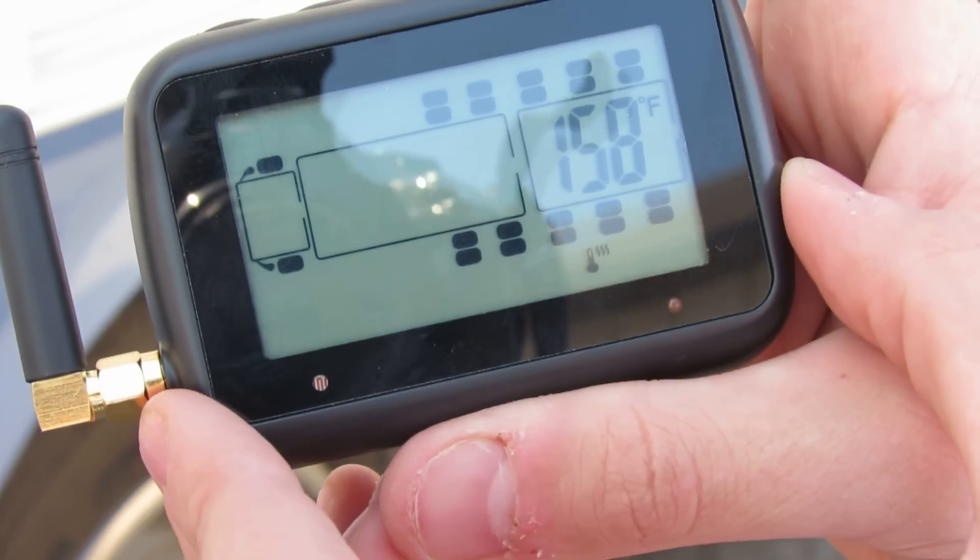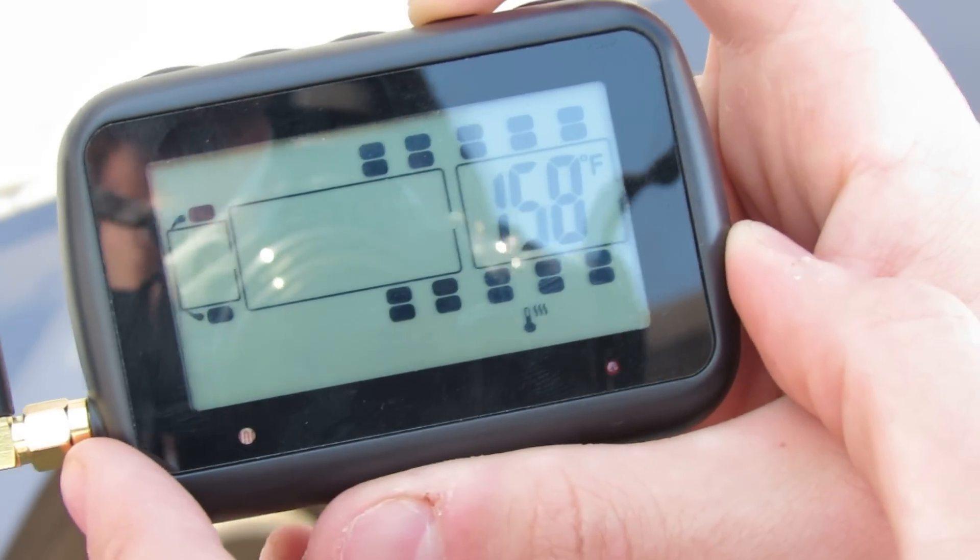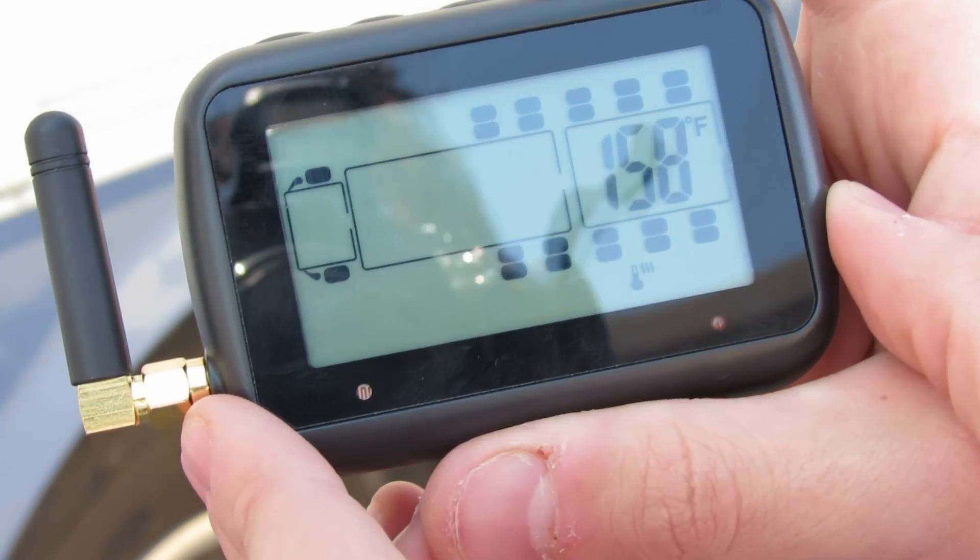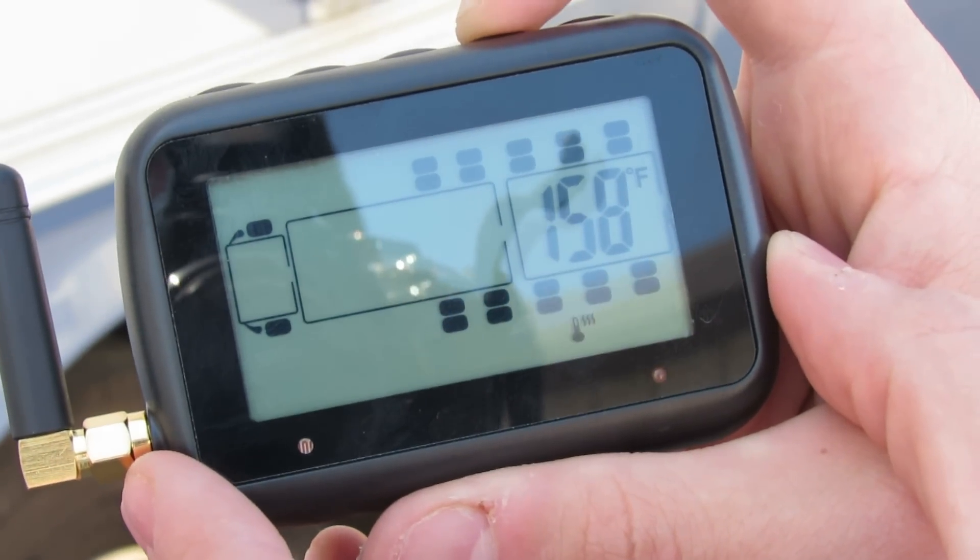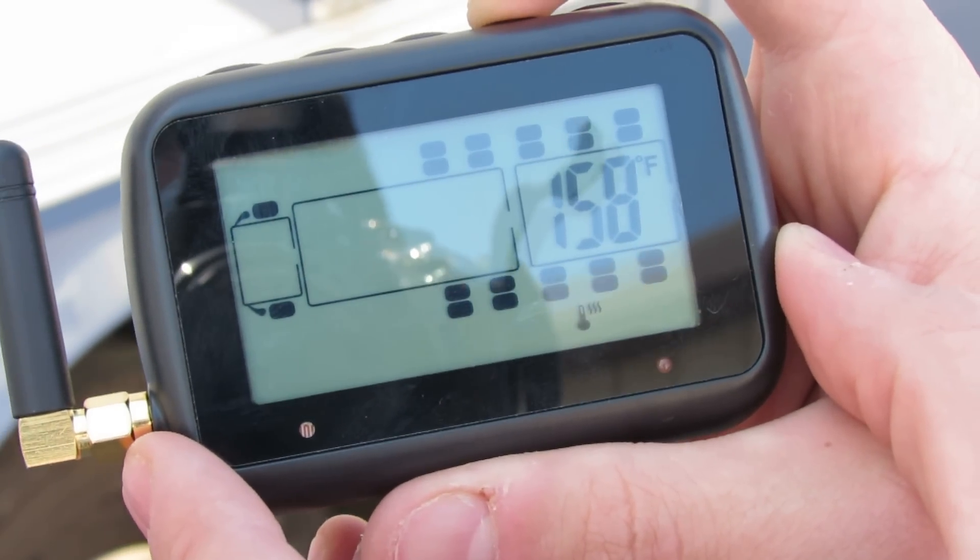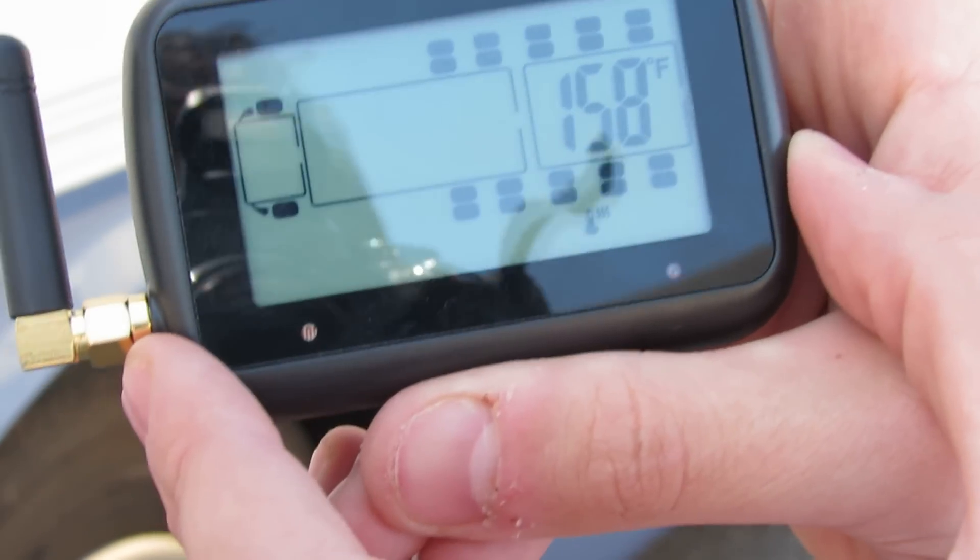158 is the default temperature for the 507 tire pressure monitoring system. You may choose to change it at any time, but we prefer that you don't because the Michelin standard is 180 to 200 degrees Fahrenheit for a tire to fail. 158 is the perfect time to let you know that your tire might be getting pretty high.